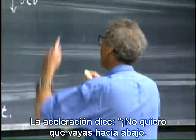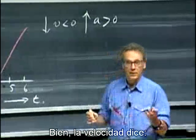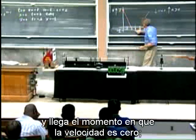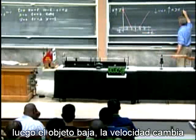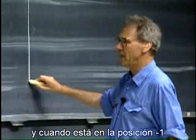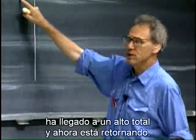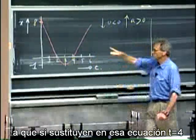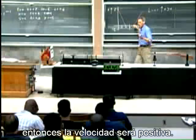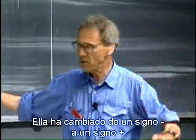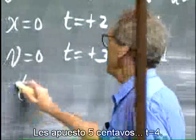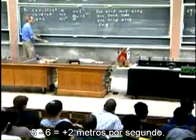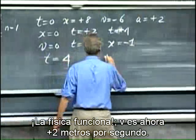But there is the acceleration, which is plus 2 — it's in this direction. The acceleration says: I don't want you to go down, I want you to go up. The velocity says: all I can do is slowly, slowly change. And that's what it's doing — slowly changing the velocity — until the velocity is 0. So the object goes down, the velocity changes, and when it is at position minus 1 it has come to a grinding halt, and now it is returning. This positive acceleration is now increasing the velocity. So I bet you a nickel: substitute t equals 4, and the velocity is better be positive. It's 8 minus 6 times 4 plus 2 times 4 — that gives minus 6 plus 2 times 4... wait: v equals minus 6 plus 2t; at t equals 4 that's minus 6 plus 8 equals plus 2 meters per second. Physics works.